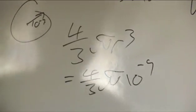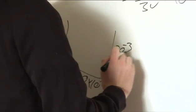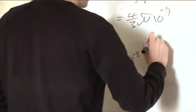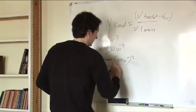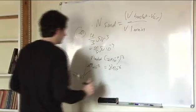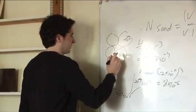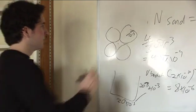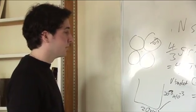So the grain volume would be four-thirds pi times ten to the minus nine. And for the bucket, if we say it's about twenty centimetres — let's make it a square bucket for ease — you're looking at two times ten to the minus two metres per side, so the volume of the bucket would be eight times ten to the minus six cubic metres. For the volume of air, I would say for each four grains there is about one air gap, so the volume of air is approximately a quarter of the volume of the sand.